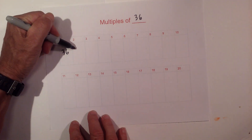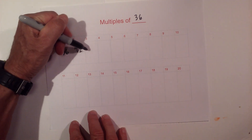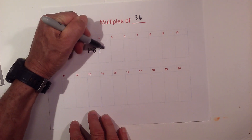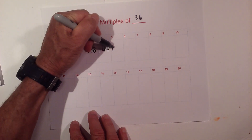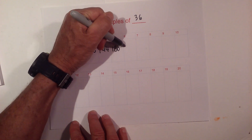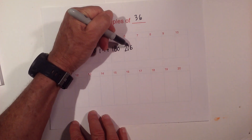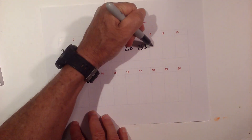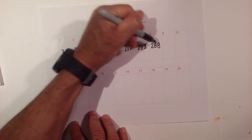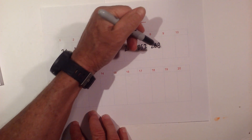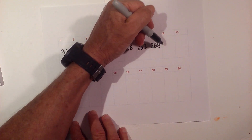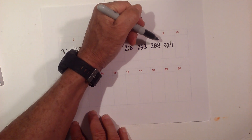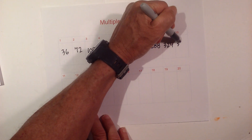We have 36 times 1, obviously it's 36, and we have 72. 108. 36 times 4 is 144. And we have 180. And we have 216. 36 times 7 is 252. And we have 288. Then we have 324. And 36 times 10 is 360.